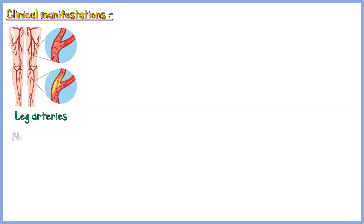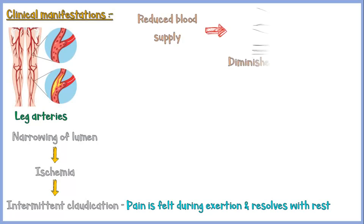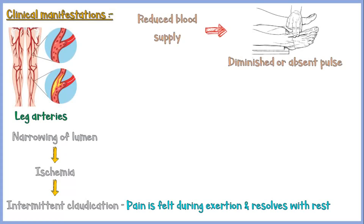PVD mainly involves the arteries of legs. Narrowing of the arterial lumen causes ischemia to the tissues supplied by the particular artery. This results in intermittent claudication, where pain is felt during exertion and resolves with resting. Reduced blood supply may cause diminished or absent pulse. The skin becomes dry and shiny, along with hair loss, and nails become thick and brittle.